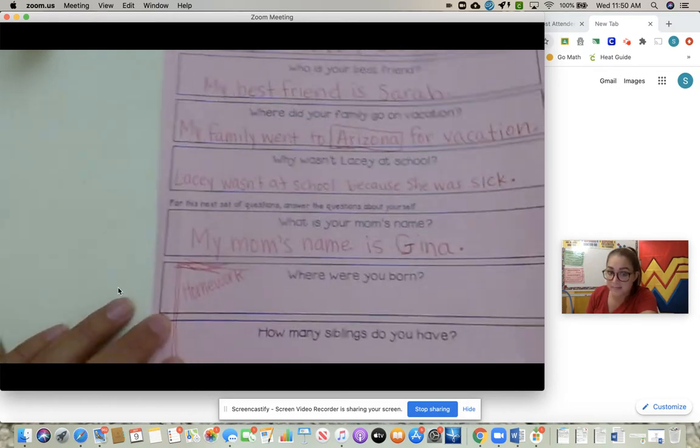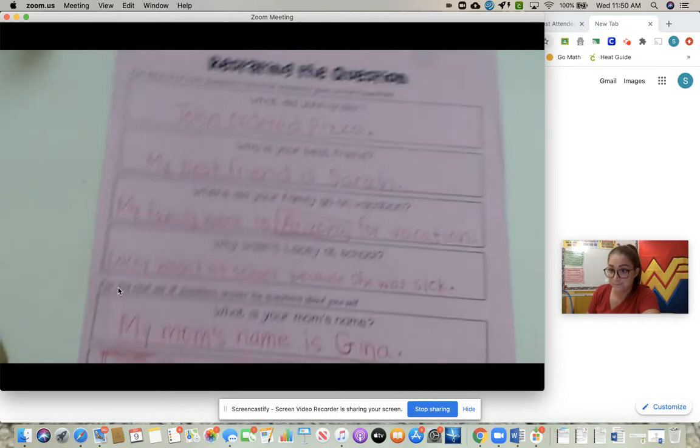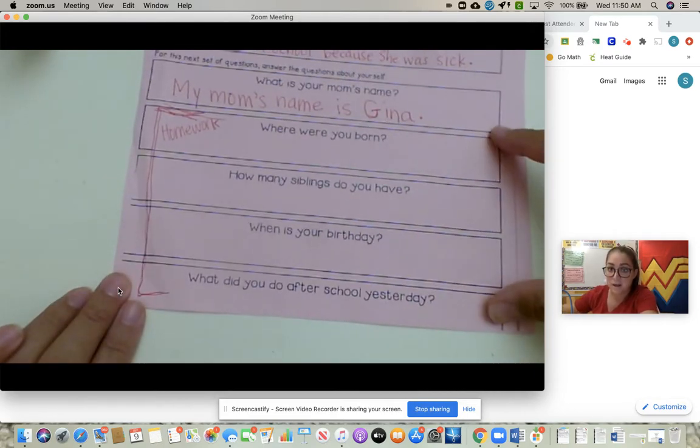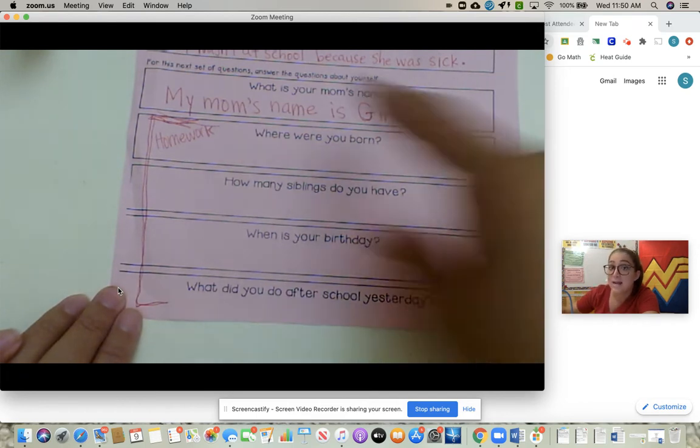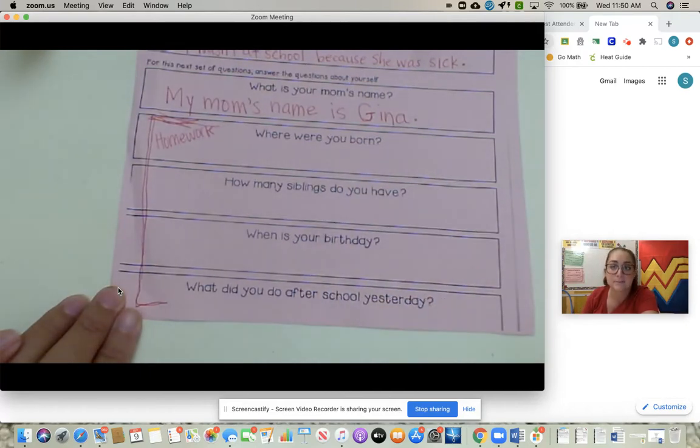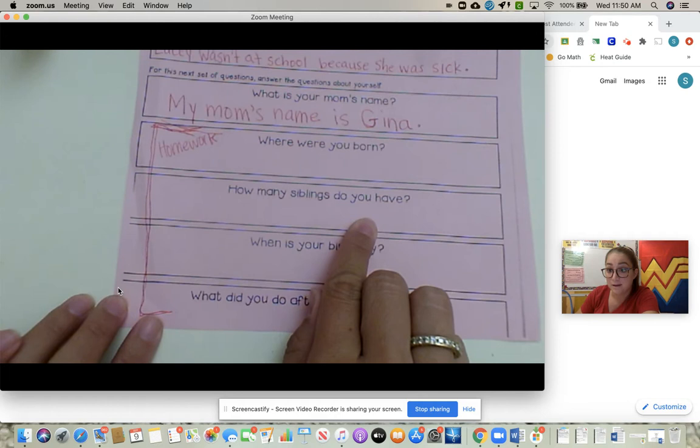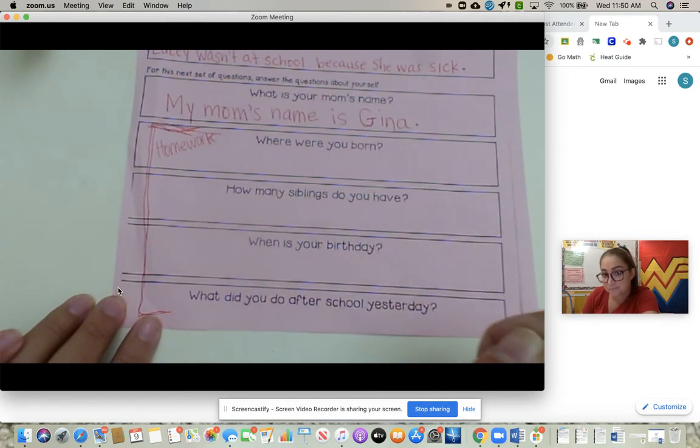The reading, our first activity took longer than expected. So yesterday we started restating the question. What they need to do for homework is to finish the bottom four of restating the question with their own answers. So it's about themselves. Where were you born? I would write, I was born in Bakersfield, California. How many siblings do you have? I would write, I have one brother.